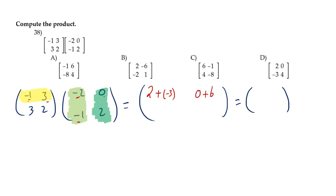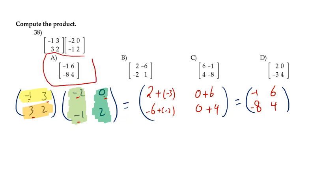So 2 minus 3 is negative 1, and 0 plus 6 is 6. Now the second row: 3 and 2. So 3 by negative 2 is negative 6, and 2 by negative 1 is negative 2. Then 3 by 0 is 0 and 2 by 2 is 4, giving negative 8 and 4. So the right answer is A.